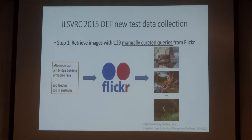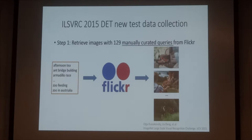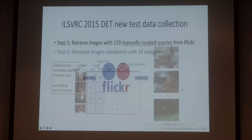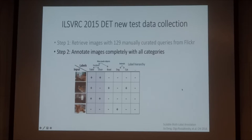First we use 129 manually integrated queries, and we query images from there. So you get a lot of same-level categories. And then you have to know what kind of categories are in the image.